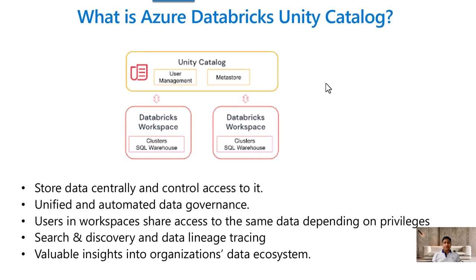So what is Databricks Unity Catalog? Databricks Unity Catalog is a unified data governance solution provided by Databricks. It helps you store your data — which includes files, tables, and databases — all in one central location and manage its access.